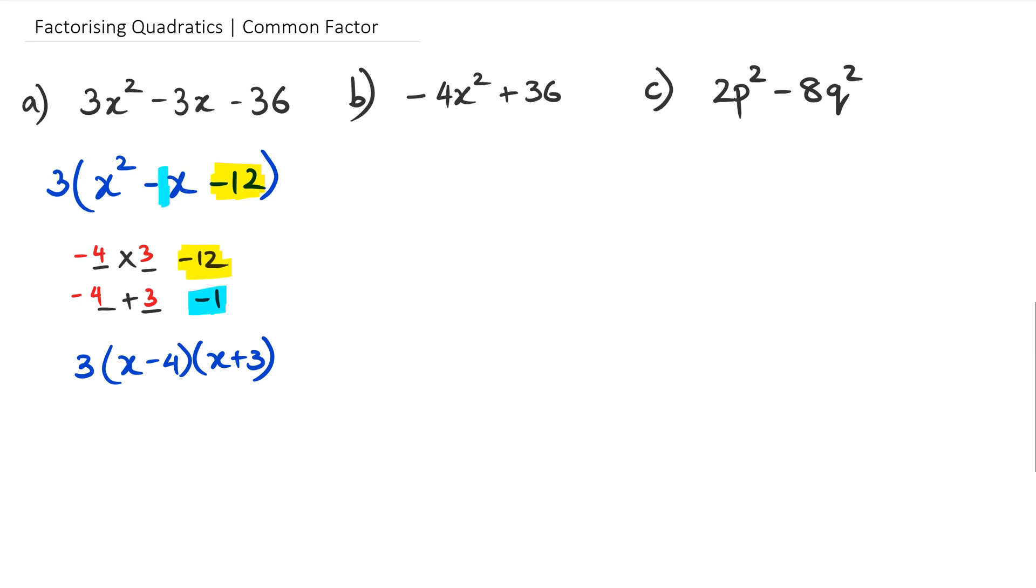And if you watched the last episode in this series, you would know that when you have a negative x squared, you want to get rid of the negative before you start factorizing. And so in this case, we're going to take out negative 4 as a common factor. And when we take out negative 4 as a common factor, what we're going to end up with is multiplied by x squared minus 9.